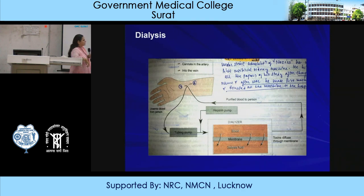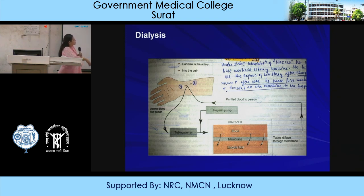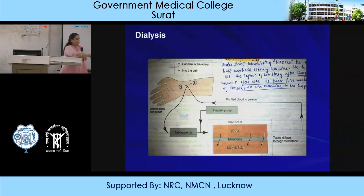In peritoneal dialysis, the peritoneum itself is used as the dialyzer. The dialyzing fluid is put into the peritoneal cavity, and as blood passes through the peritoneal blood vessels, there is exchange of waste products through the peritoneum into the peritoneal cavity. The fluid is removed after saturation is complete. This can be done at home by the patient without requiring a nurse.